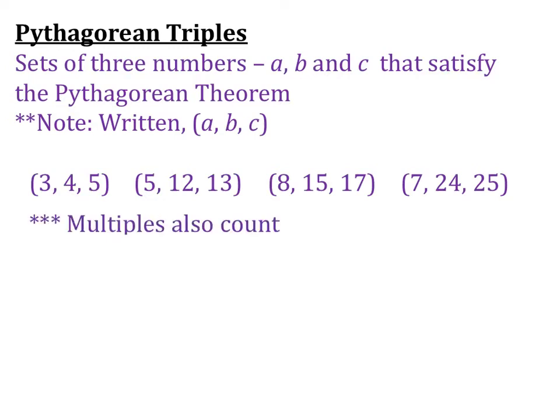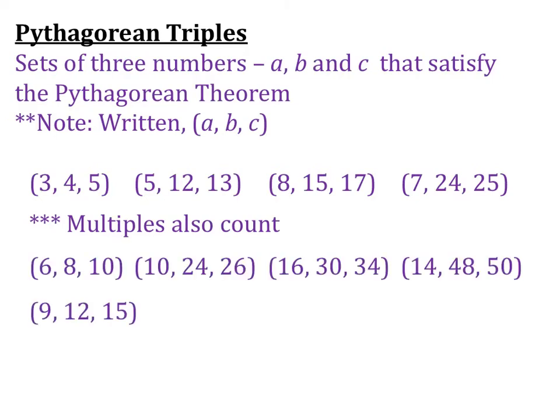Also, any of the original Pythagorean Triples have multiples. So, for example, if we multiplied a 3-4-5 by 2, then we would get a 6-8-10. Or if we multiplied it by 3, we would get a 9-12-15. So all multiples of these originals that I asked you to memorize are also fair game on all tests and quizzes.